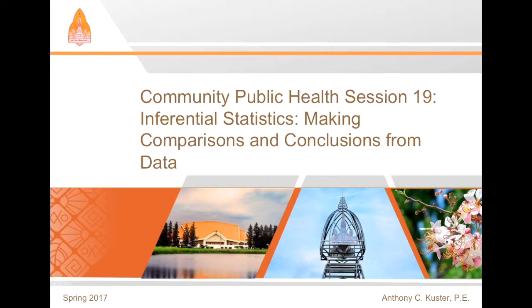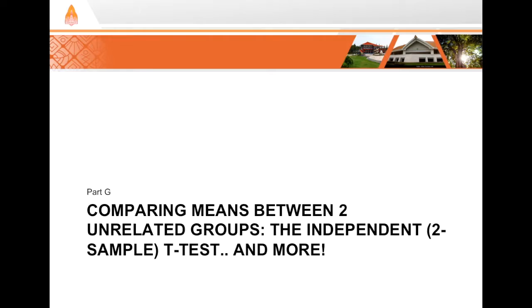Hello and welcome to CPH session 19, Inferential Statistics: making comparisons and conclusions from data. This is part G, comparing means between two unrelated groups — the two-sample independent t-test, and more.